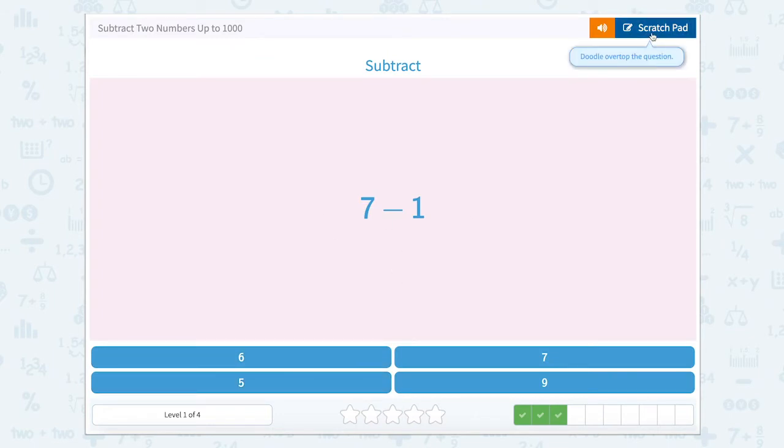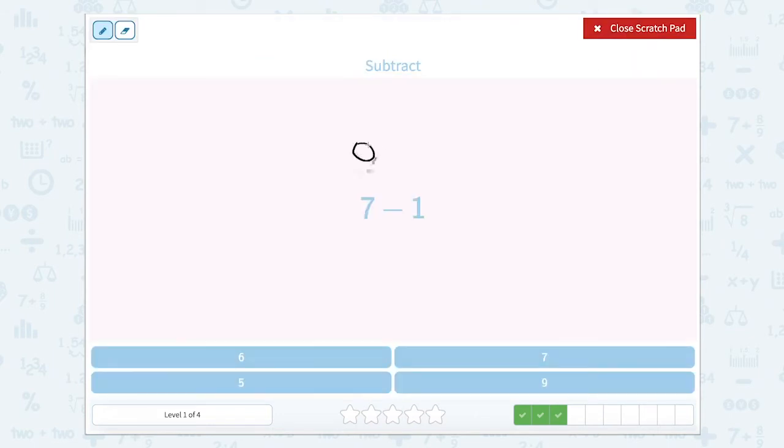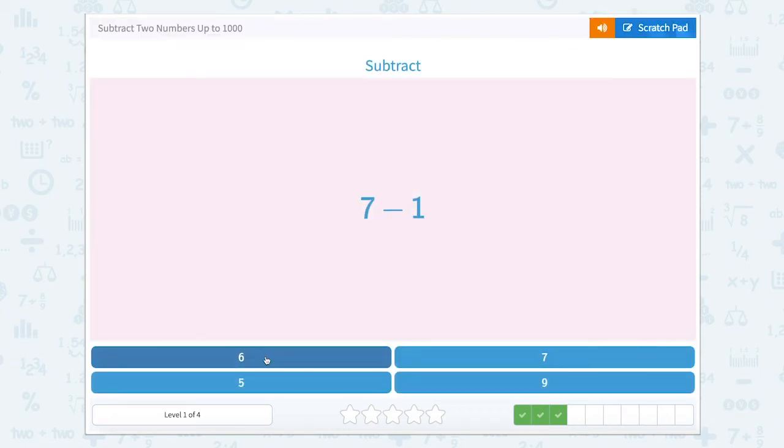Now we have seven minus one. So let's draw seven circles. One, two, three, four, five, six, seven. We're taking away one, which leaves us with one, two, three, four, five, six. Close that scratch pad. Click on six.